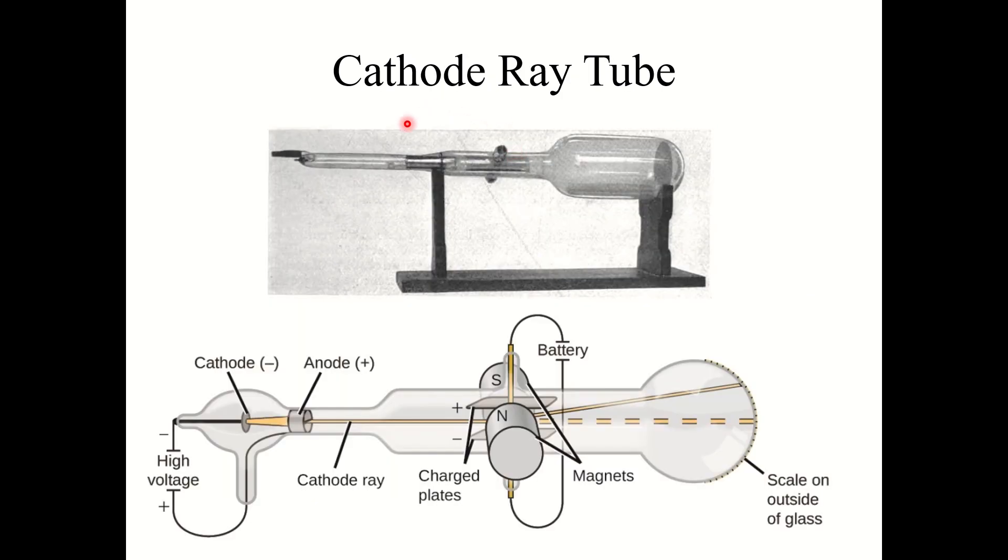So let's talk about what a cathode ray tube is. You may or may not have heard of a cathode ray tube. This is what they used to use for televisions, those giant big box televisions back in the day before LEDs, plasmas, and things like that got popular.